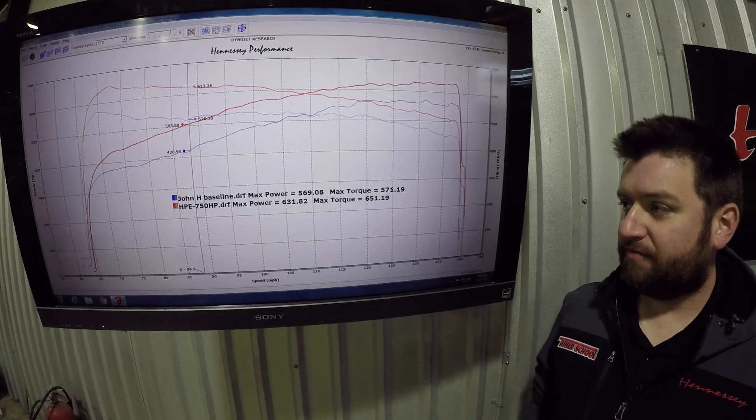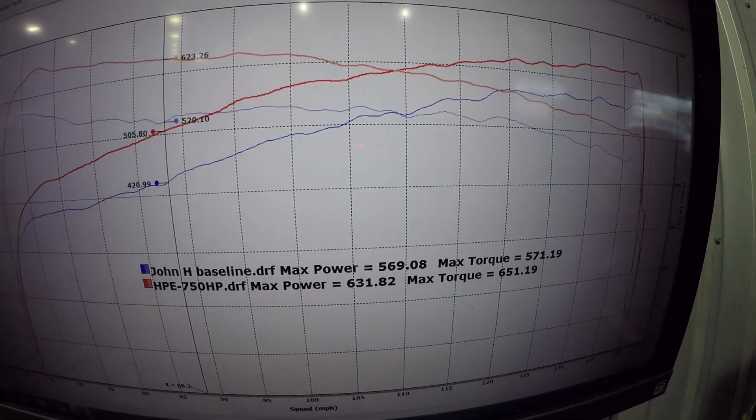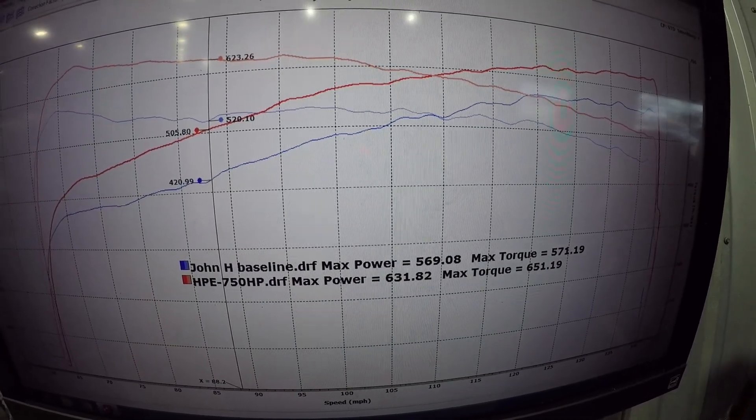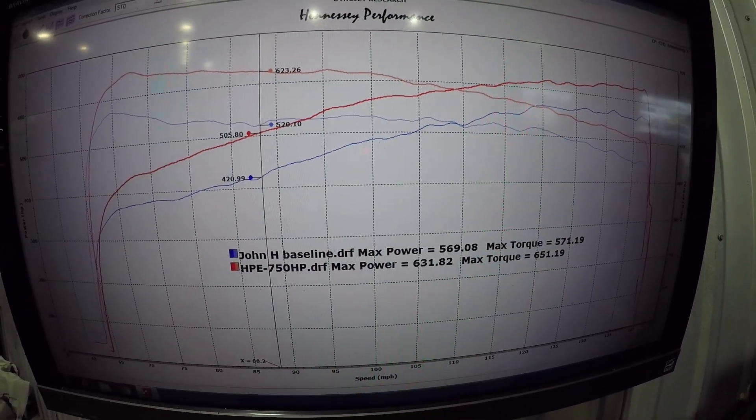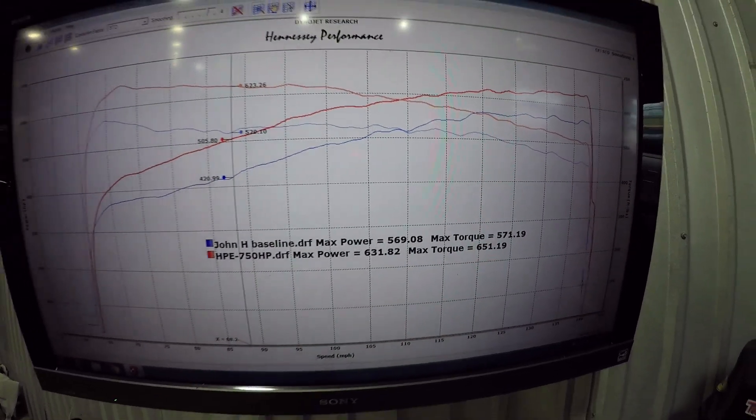This car came in making 569 rear wheel horsepower and 571 foot-pounds of torque, and with our HPE 750 package, it's leaving with 631 rear wheel horsepower and 651 foot-pounds of torque.